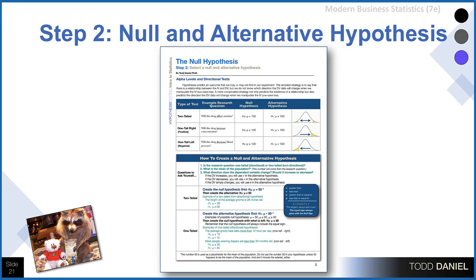Step number two: select a null and alternative hypothesis. I'm going to spend a lot of time today talking about null and alternative hypotheses — how we select them using a one-tailed test or a two-tailed test, and always including the equal sign with the null hypothesis.